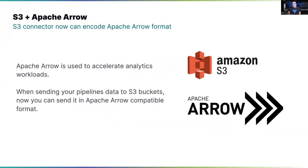Thousands of users use FluentBit to send data to S3 buckets on Amazon S3. We got an interesting use case where the data being shipped was going to be consumed for analytics use cases and they needed it in Apache Arrow format. A contribution from the company AirCode implemented Apache Arrow encoding for the S3 connector. So if you rely on Apache Arrow and want to use S3 buckets, you can now do this with FluentBit.